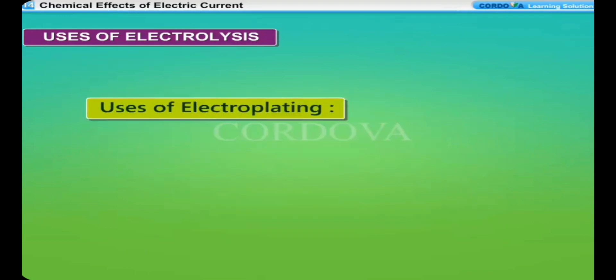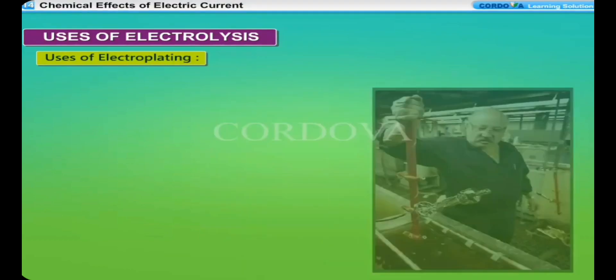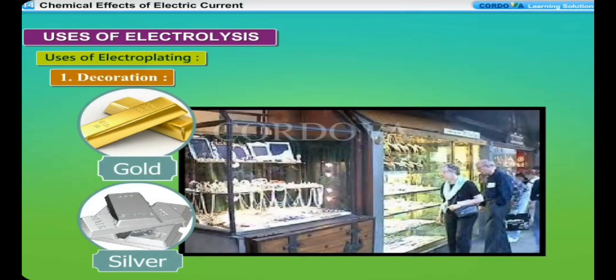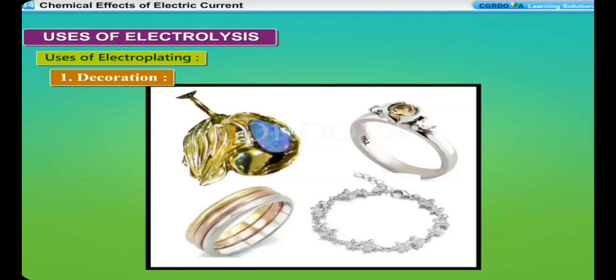Uses of electroplating: Electroplating is done for various purposes. Here are a few examples. Decoration: Metals used for making jewellery, like gold and silver, are very expensive. The artificial jewellery made from less expensive metals is electroplated with expensive metals like gold and silver to give expensive look.